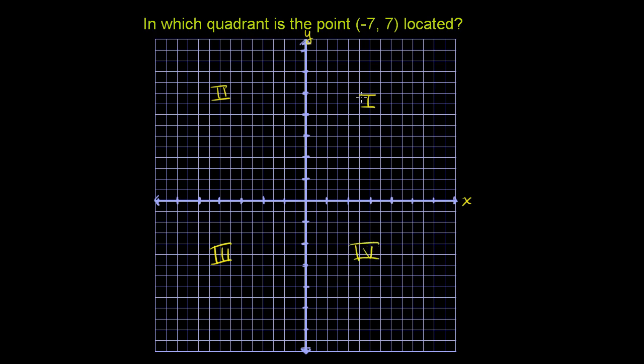So let's see which quadrant the point (-7, 7) is located. There's two ways to think about it. You could just say, look, we have a negative x-value. Our x-value is negative, so we're going to move to the left. So we're going to be on this side of the coordinate plane. So just by the fact that the x-value is negative, we're going to be either in the second or the third quadrant.